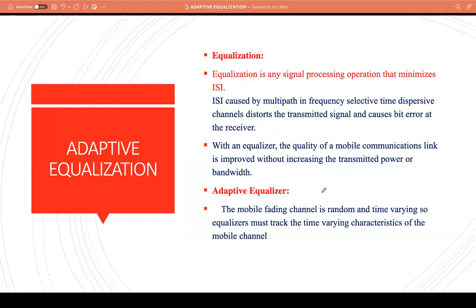So why is this equalizer called an adaptive equalizer? The equalizer is called adaptive because the channel is not constant, it keeps changing, it is random, and hence the equalizers need to keep tracking the channel at all times. Hence it is called an adaptive equalizer.